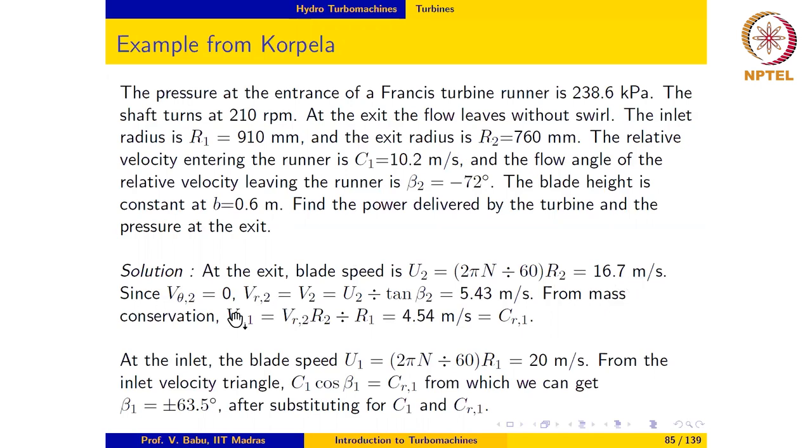Since Vθ2 equal to 0, we may evaluate the radial velocity at exit Vr2 equal to V2 equal to U2 divided by tangent of β2 as 5.43 m per second.